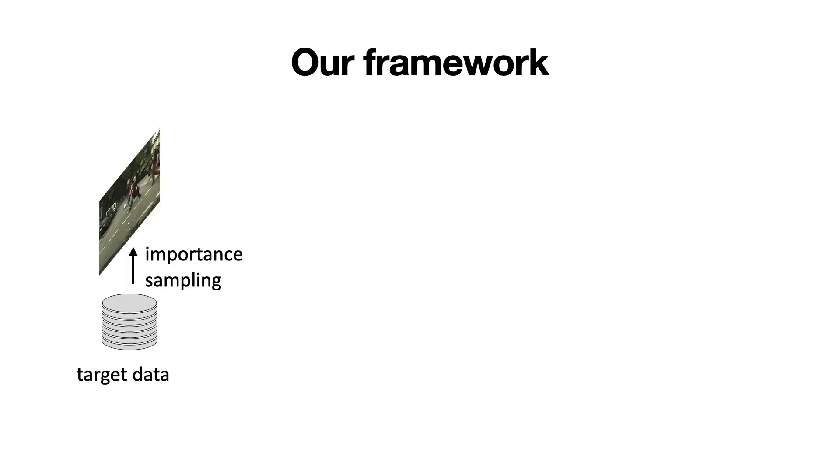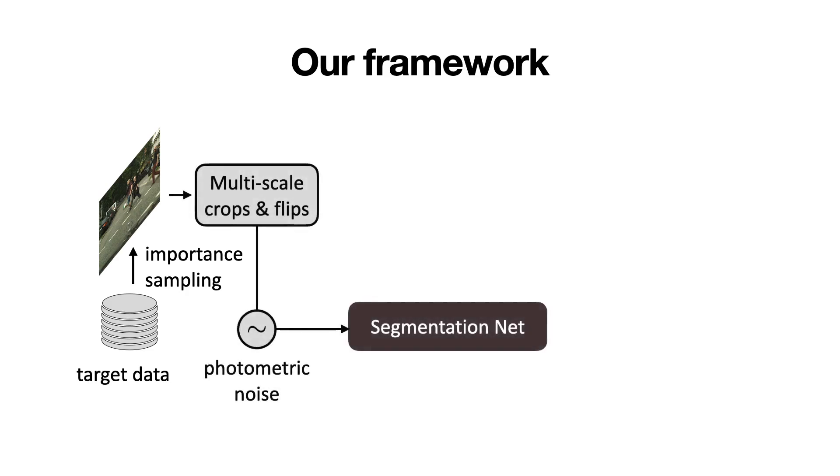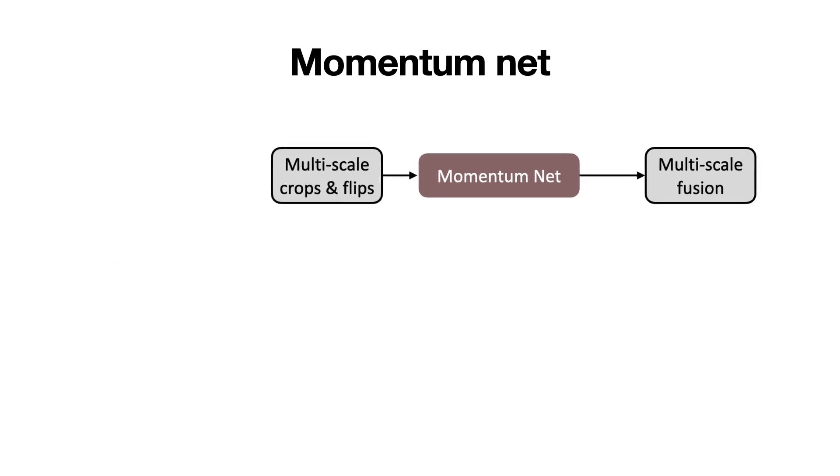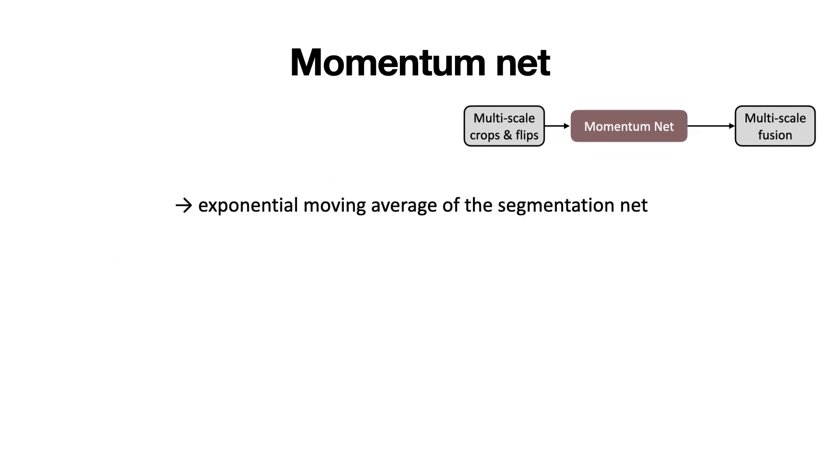To train our framework on the target data, we first draw target images using importance sampling. We generate random crops and flips for each sample image, then add random photometric noise and feed it to the segmentation network. In parallel, we feed the same image batch but without the photometric noise to the so-called momentum network. The outputs produced by the momentum network are used further to generate pseudo-labels. We then use these pseudo-labels to train the segmentation network. The momentum network is an exponentially moving average of the segmentation network, which greatly improves the training stability.